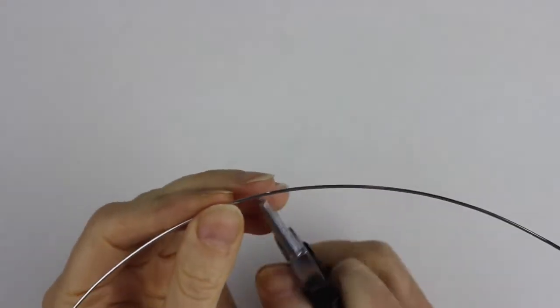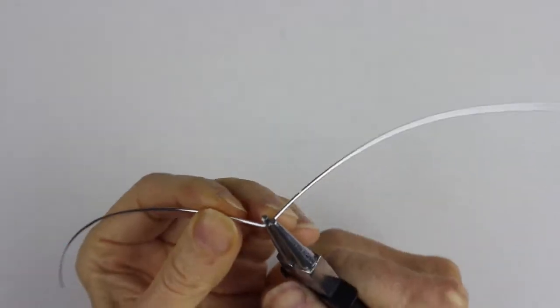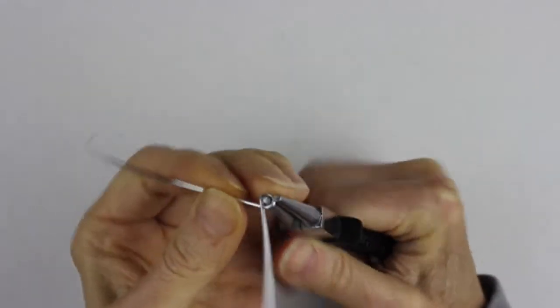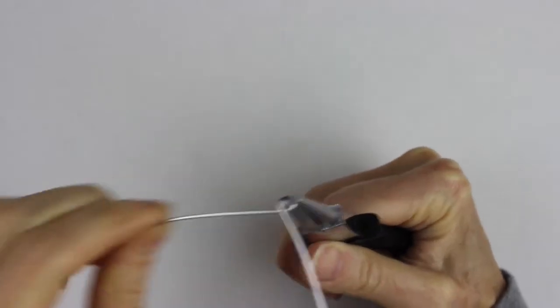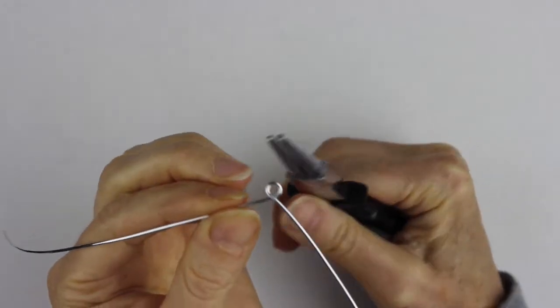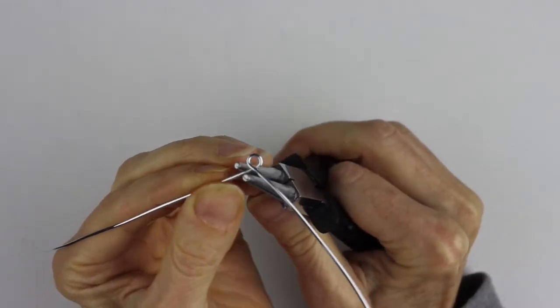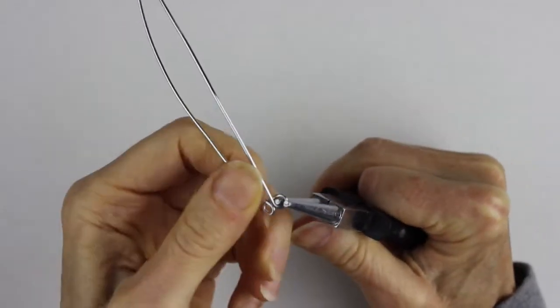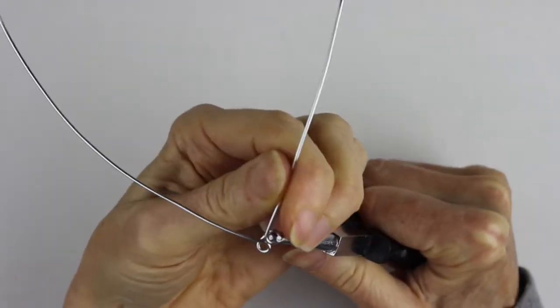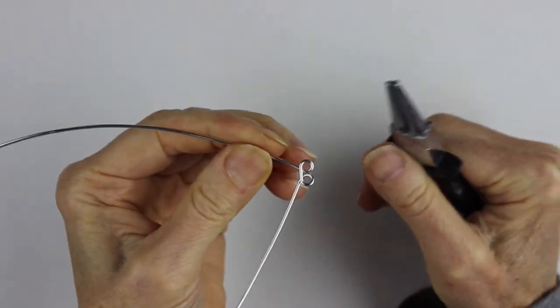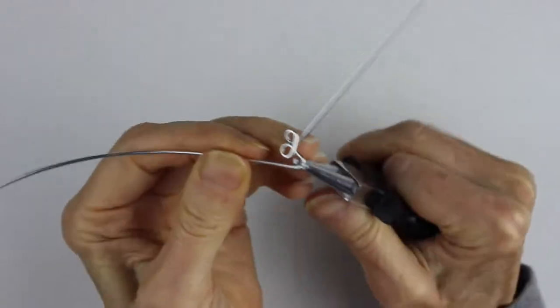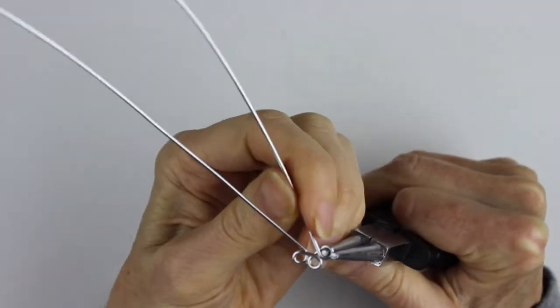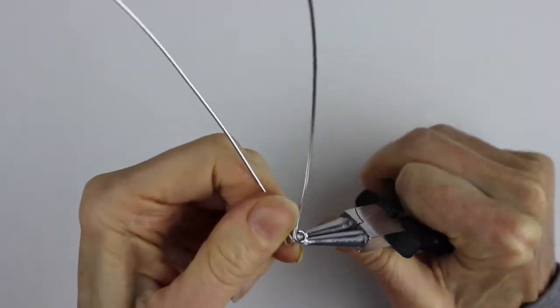To get started, we'll take our thicker wire and just start by doing a little loop at the top. This will be where you hang it off the necklace. To make it more decorative, we want to add a couple of other little loops with our larger round pliers. Then another one, flip it over and do another one on this side, so it's almost like a Celtic kind of clover type configuration.